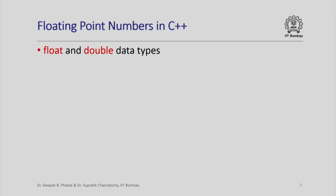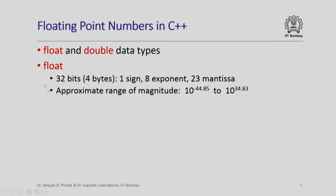In C++, how do we declare floating point variables? There are two data types: float and double. Float uses 32 bits, or 4 bytes, to represent a floating point number. Of these, 1 bit is reserved for the sign, 8 bits for the exponent, and 23 bits for the mantissa in normalized form. The approximate range of magnitudes representable is from 10 raised to -44.85 to 10 raised to 34.83. It is an interesting exercise to derive these ranges from the number of bits used for exponent and mantissa, and I encourage all of you to try.